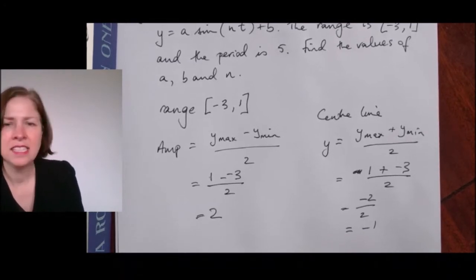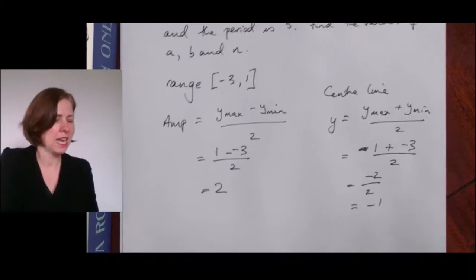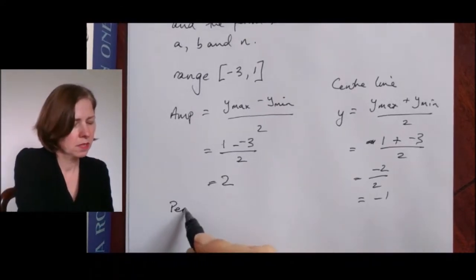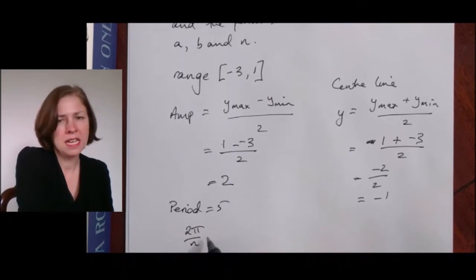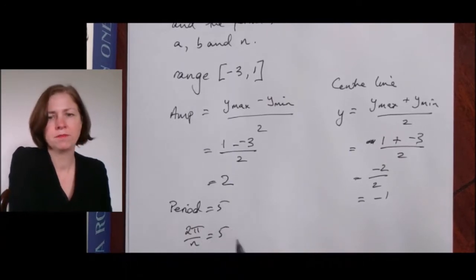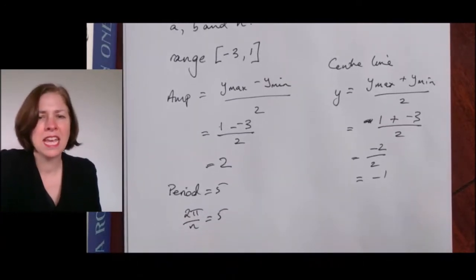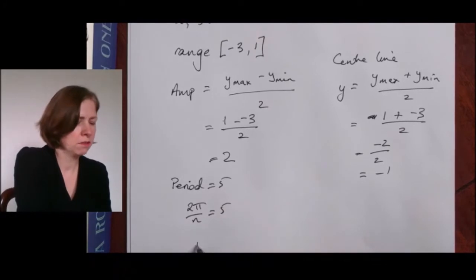The next thing I know is that the period is five, so I can now find n. Period is five, so two pi on n equals five. Solving that gives n equals two pi on five.